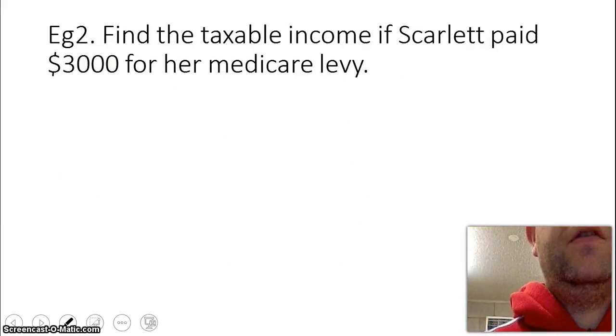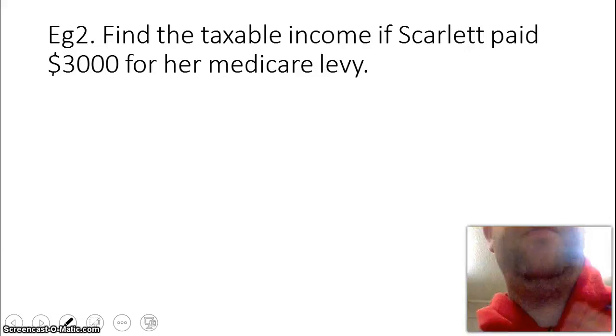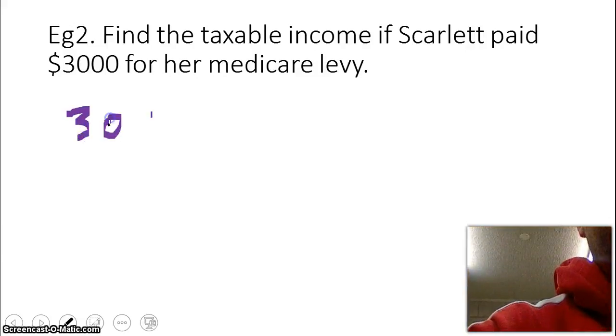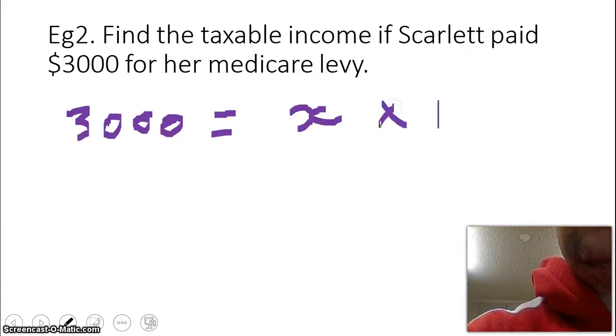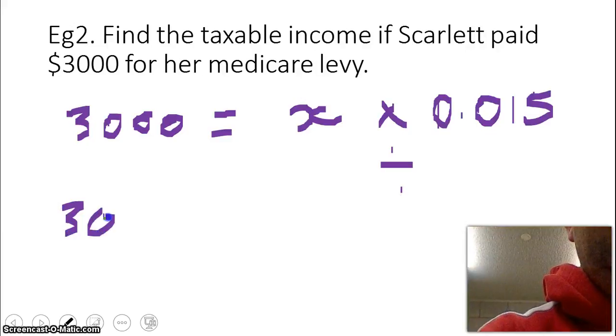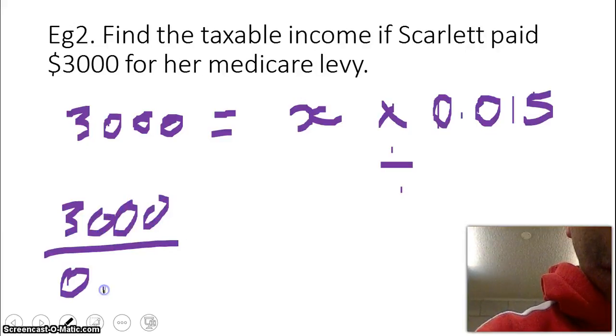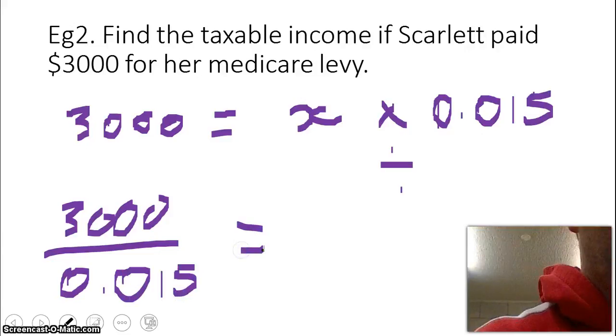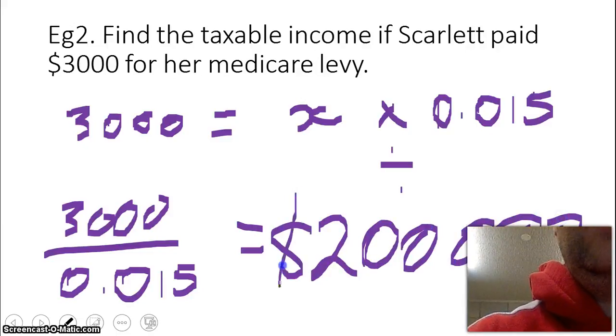If Scarlett paid $3,000 on her Medicare levy and we need to find the taxable income, we're going the other way. So we've got our $3,000 and that's some number which I'm going to call x times 0.015. So all we're going to do once we've set up that equation, we're just going to do the opposite operation so we're going to divide. So we take our $3,000 and we divide it by 0.015 and that gives us our answer of $200,000.